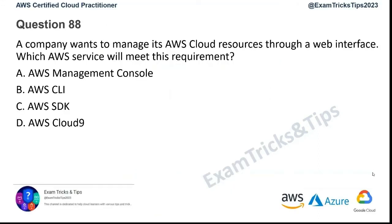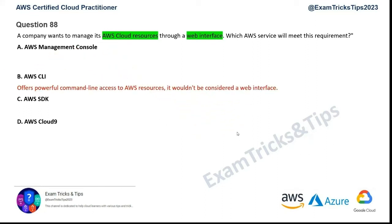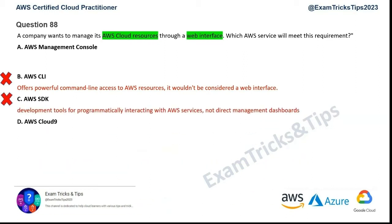Question 88: a company wants to manage its AWS cloud resources through a web interface — which AWS service will meet this requirement? Mark your keywords: manage AWS cloud resources through a web interface. The main keyword is web interface. AWS CLI is used for managing resources, but it's a command line interface — not a web interface — so that's wrong. AWS SDK can programmatically interact with AWS services, but it doesn't have a web interface for controlling and managing cloud resources, so that's gone. AWS Cloud9 is a cloud-based IDE for development — it's not a general-purpose management console for administrative tasks — so that's gone as well.